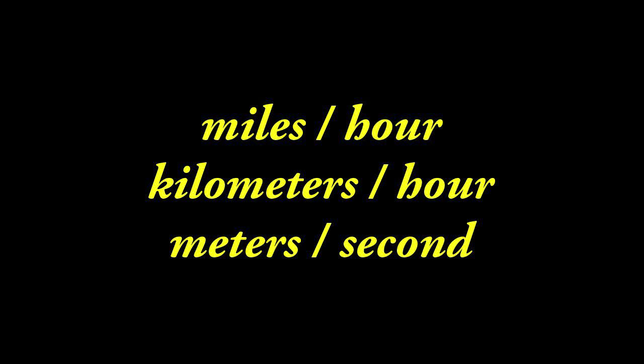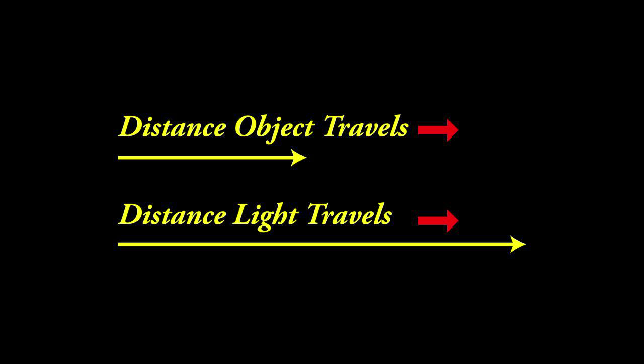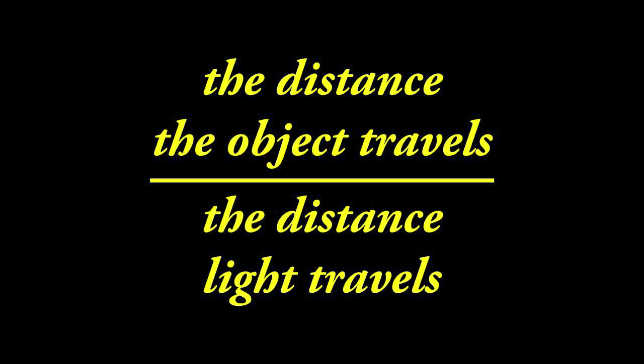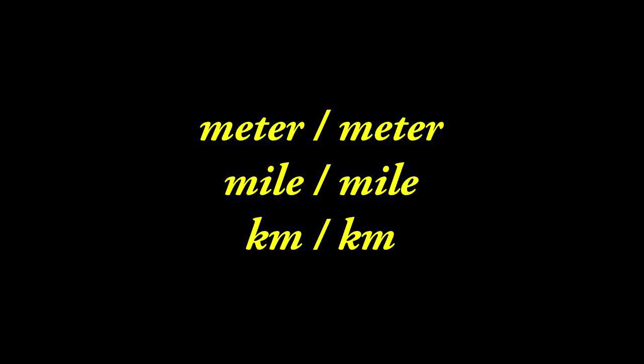Understanding time leads us to a new way of measuring motions. Right now, people think in terms of miles per hour, kilometers per hour, and meters per second — distance divided by time. Instead, in this new physics, we think in terms of how far an object moves divided by how far light moves. To correctly measure something's motion, you take the distance the object travels and divide it by the distance light travels. As a result, we will measure motion in terms of meters per meter, miles per mile, and kilometers per kilometer — the ratios of two distances.